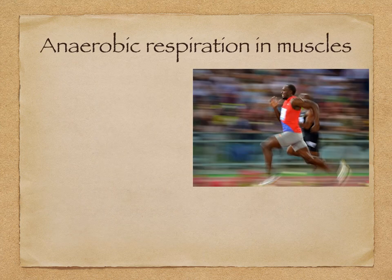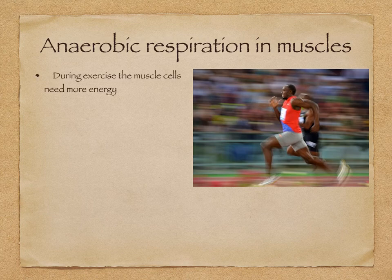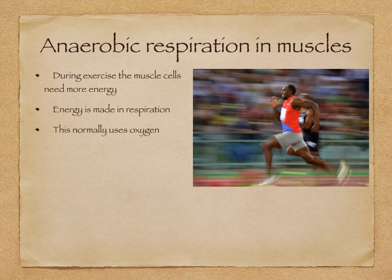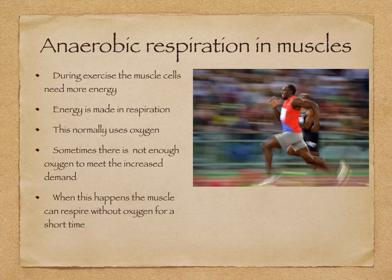When you exercise, what is actually happening in your muscles? Your muscles need oxygen and glucose to respire aerobically. But during vigorous exercise, your heart and lungs cannot get enough oxygen to your muscles quickly enough, so your muscles start to respire without oxygen. During exercise, your muscle cells need more energy, and this energy is made in respiration. This usually uses oxygen, but sometimes there's not enough oxygen to meet the increased demand. So when this happens, the muscles can respire without oxygen for a short time — we call this anaerobic respiration.